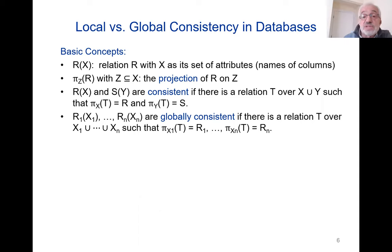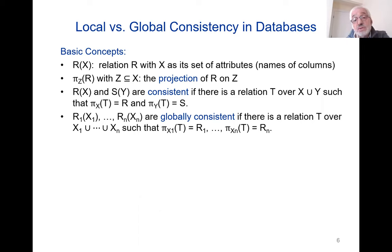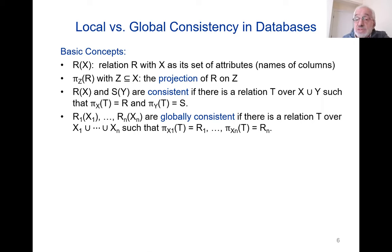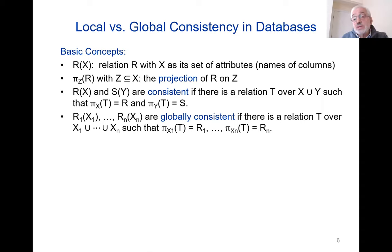Now we come to the definition of consistency and global consistency. We say two relations are consistent if there is a relation over the union of the sets of attributes such that the projection of this relation T on the attributes of r gives us r, and the projection on the attributes of s gives us s. And if we have a collection of relations, we say they are globally consistent if there is a master relation over the union of the sets of attributes so that the corresponding projections give us each of the relations.